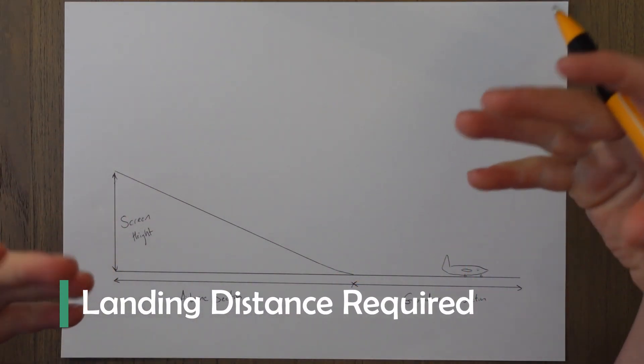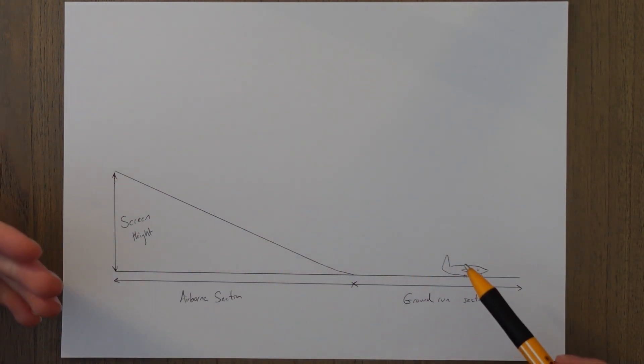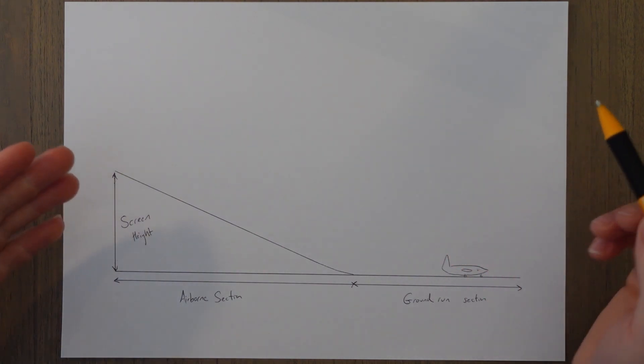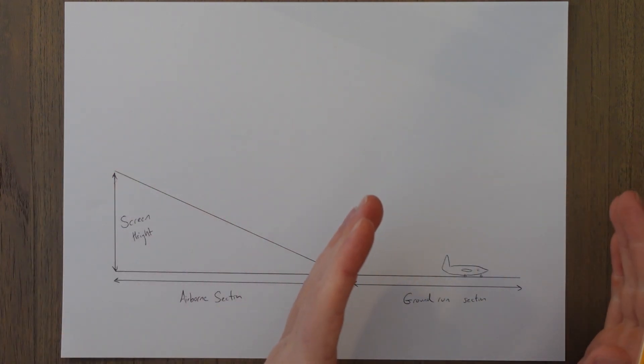But before we do that we're going to have to learn how to land and more importantly stop an aircraft safely. The landing distance required for an aircraft starts from the screen height until the aircraft comes to a stop on the runway. This means that there is a section of landing distance which is actually in the air and also a ground run section.